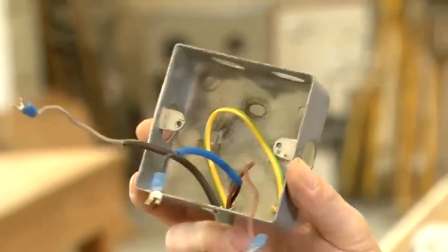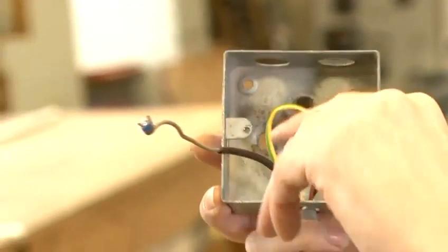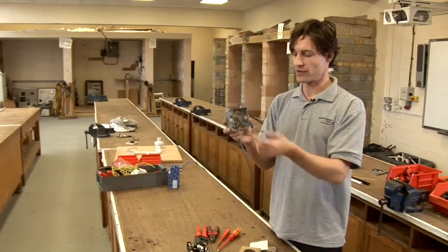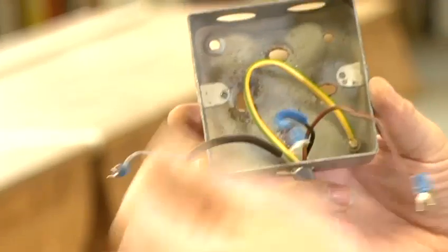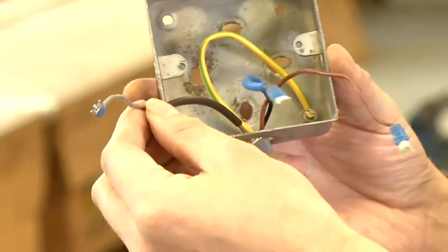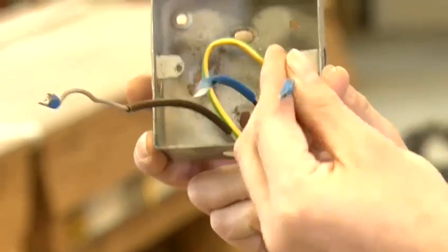It shouldn't really be wired in flex as it is part of the fixed wiring for a domestic property. I've also oversleeved each core to denote their polarity because we have a switch line, a neutral and we have a permanent live.